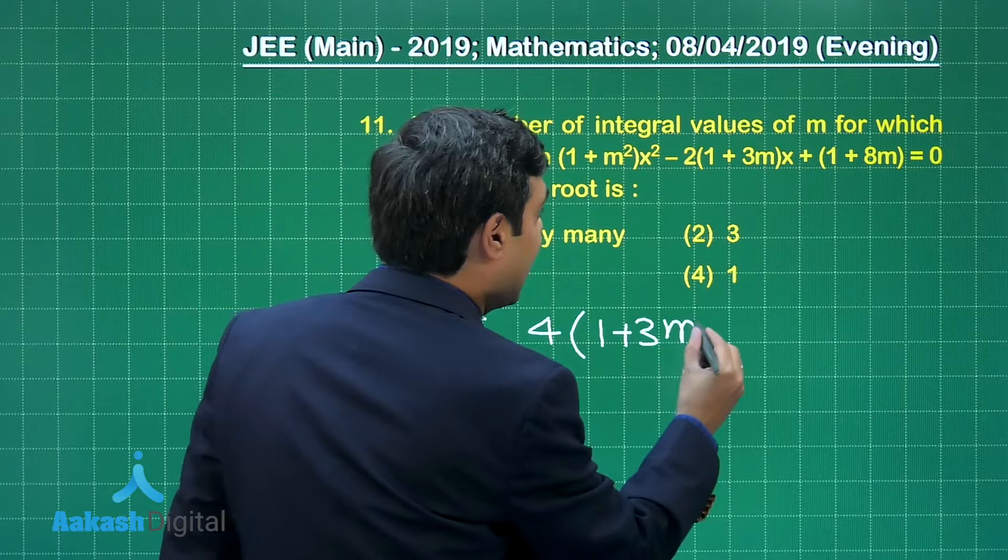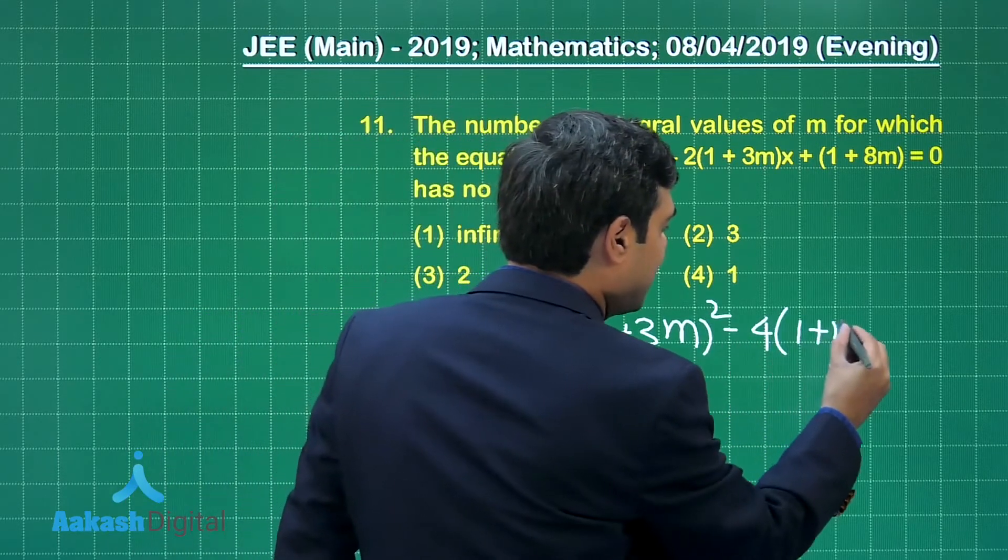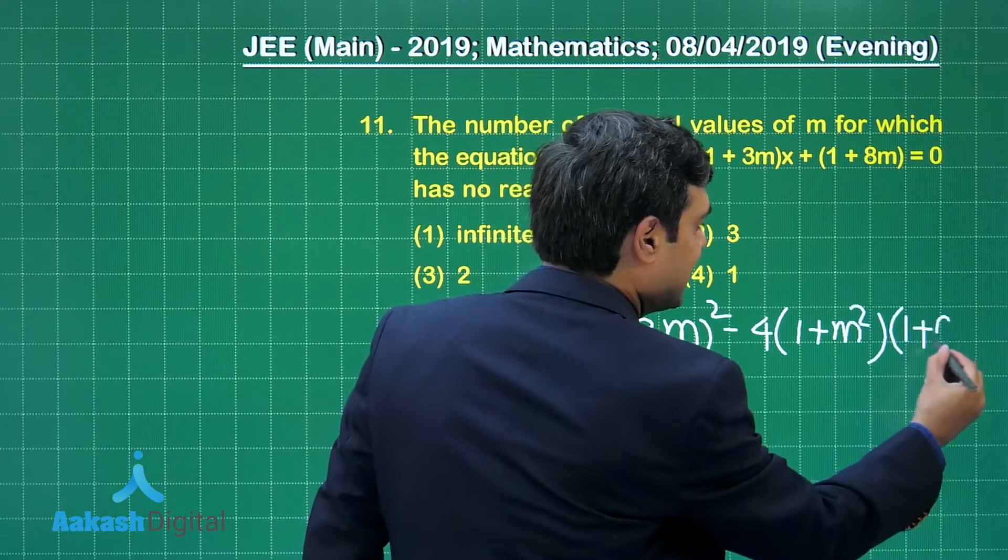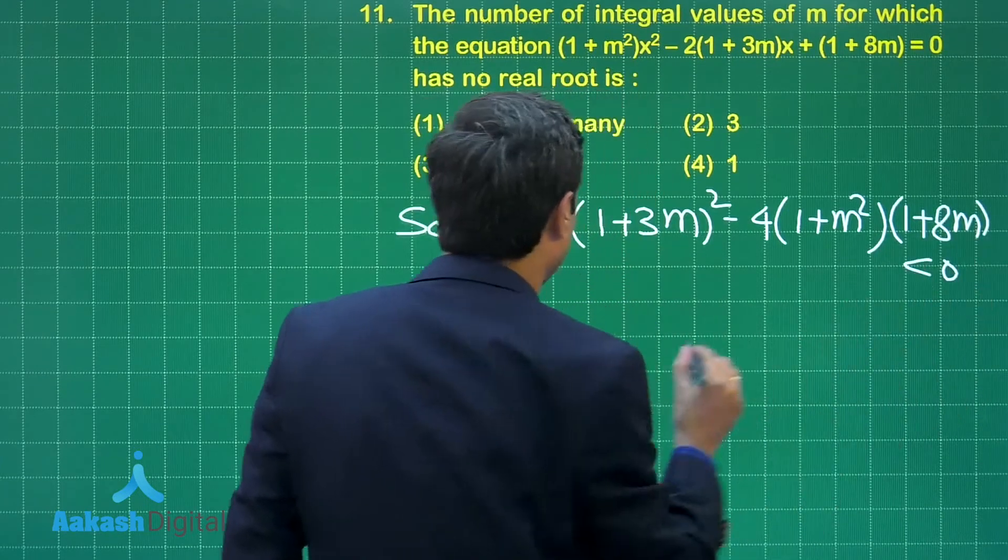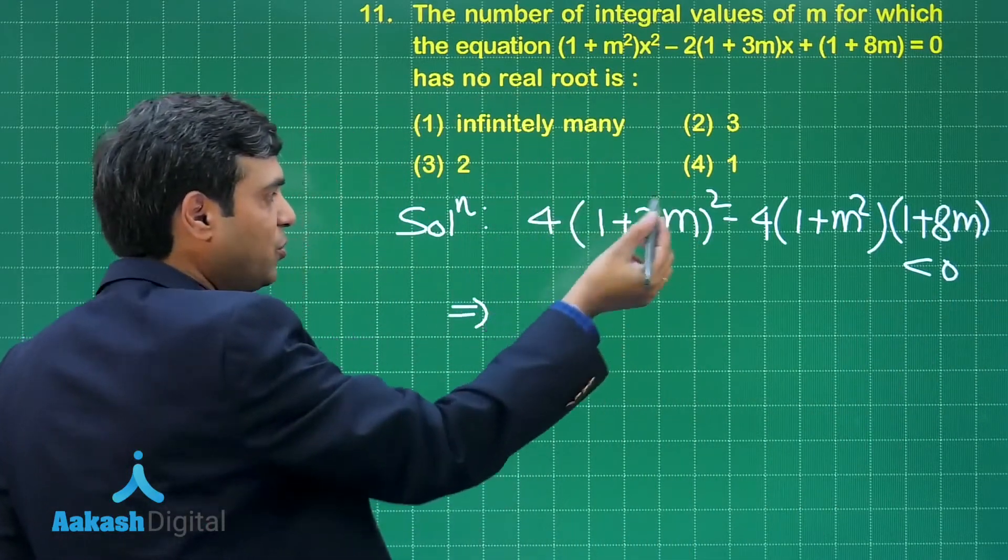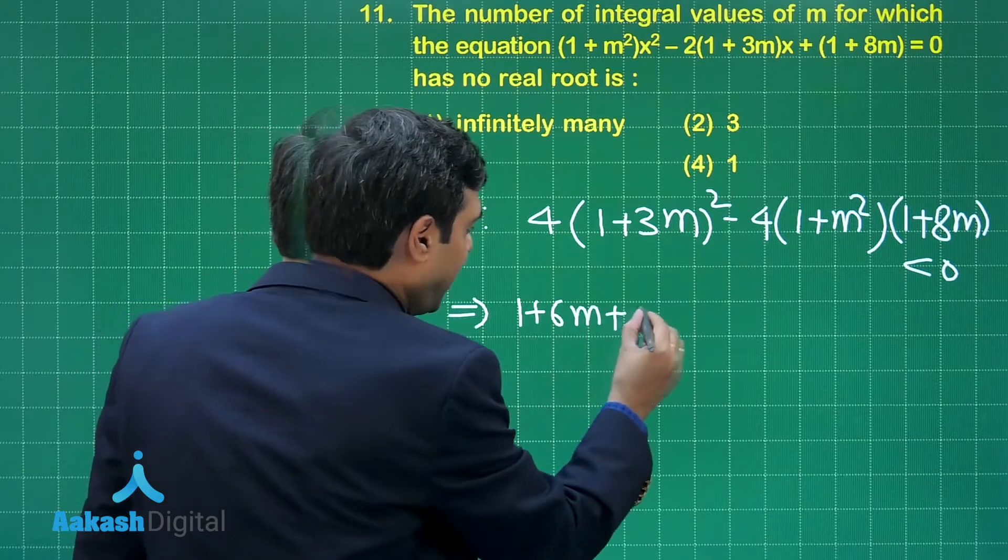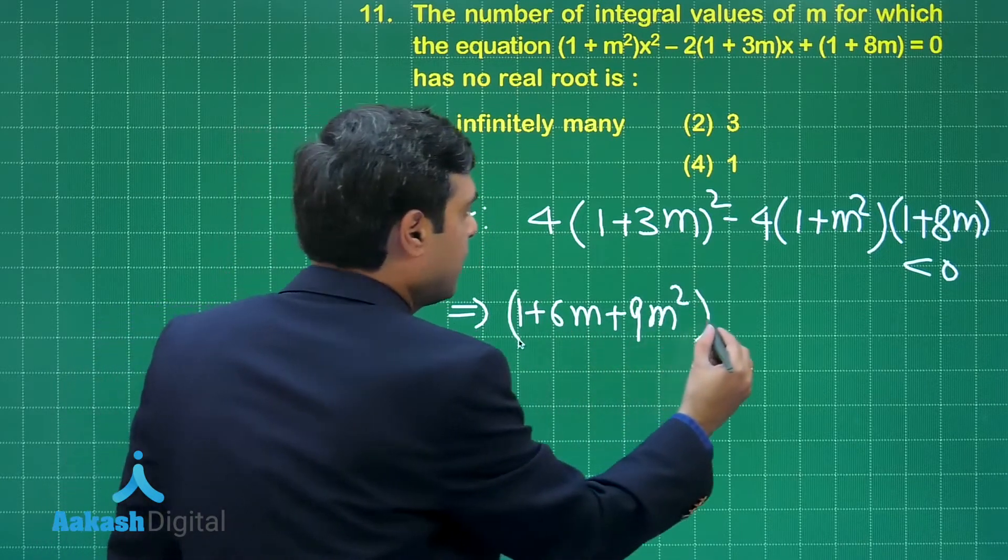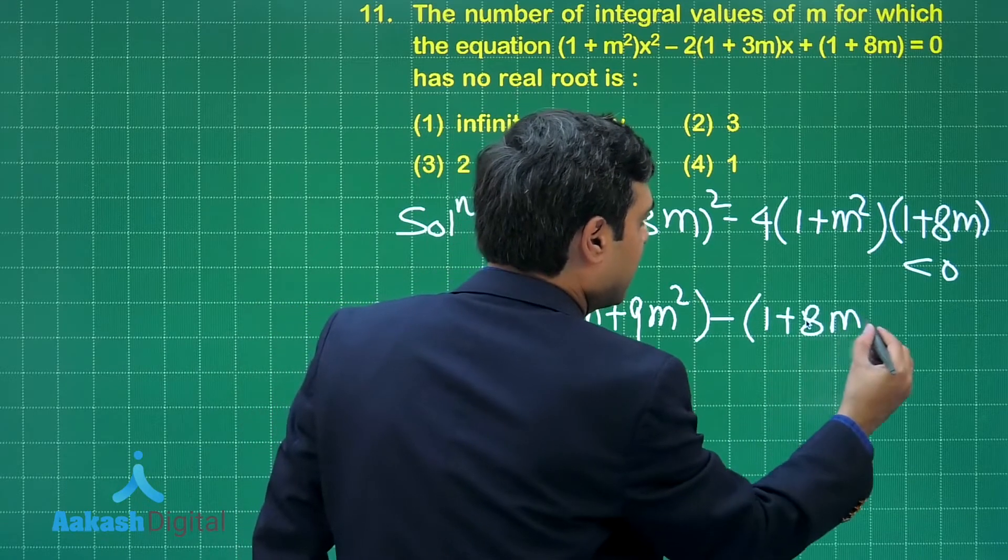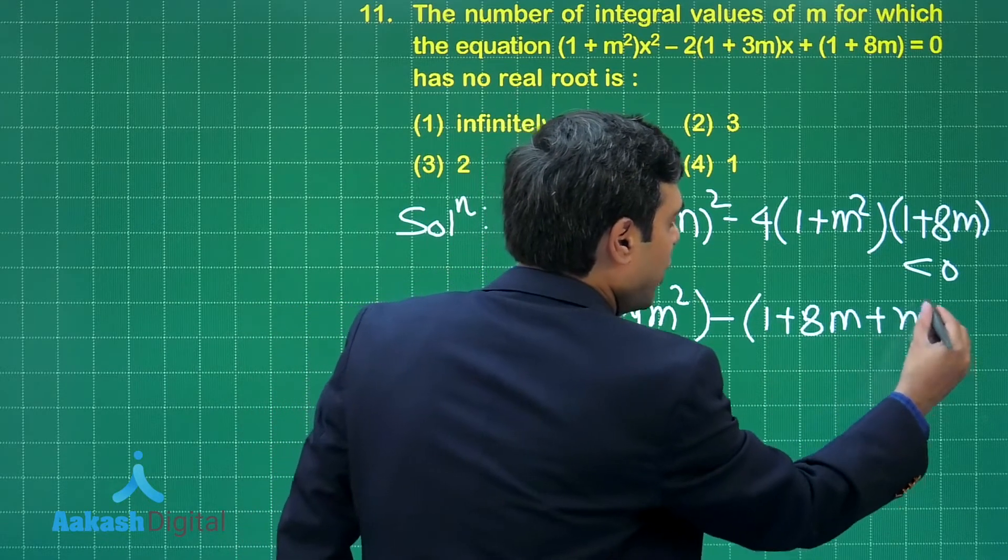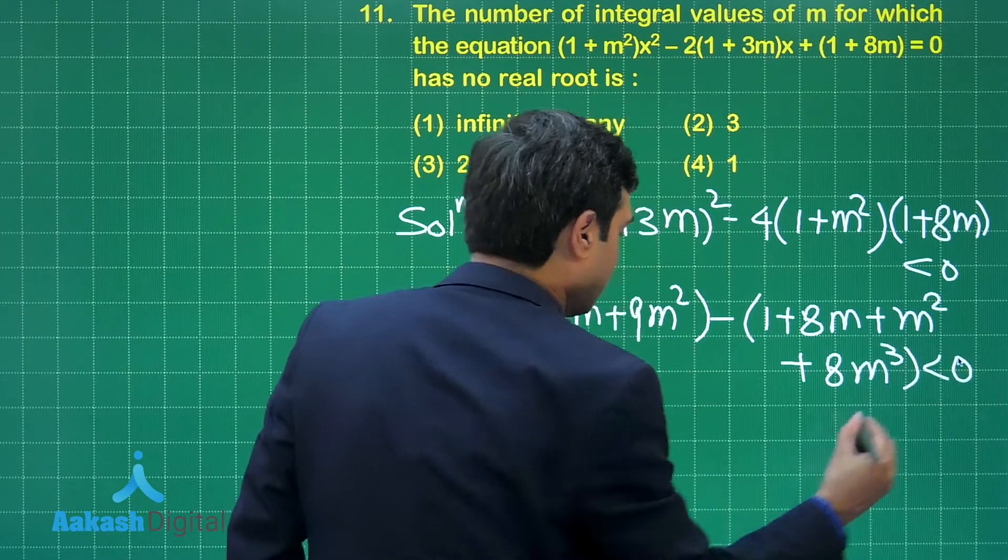Looks a bit calculative but not difficult. (1 + 3m)² - 4(1 + m²)(1 + 8m) should be less than 0. Simplifying, 4 can be thrown to the other side. We are left with 1 + 6m + 9m² - 1 - 8m - m² - 8m³ less than 0.